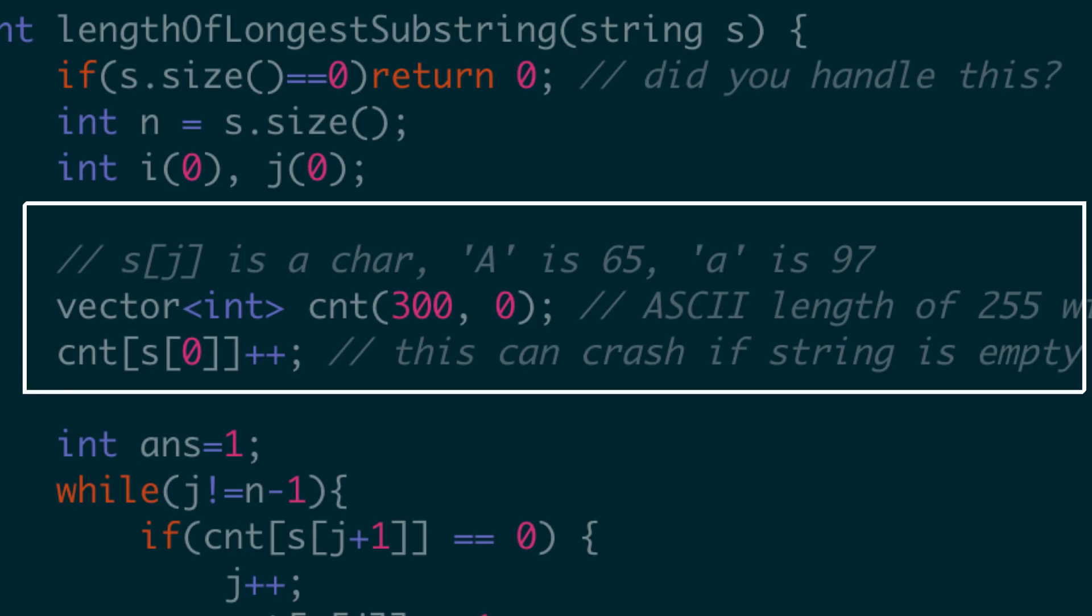Now, what I'm trying to do is the first character, I'm incrementing the count of that. So you can see that count of s[0], which is the first character, I'm incrementing the count. And I'm saying that before I start with my algorithm, my current window is at the first character. i and j are 0, which means my window currently has only the first character. And that's why I'm incrementing that count.